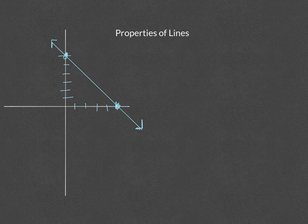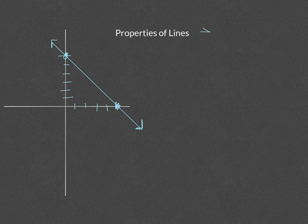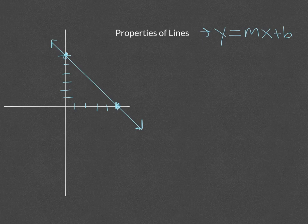We're going to take a look at the properties of lines that are in the form y equals mx plus b. So the first thing that a line will have is what's called the x-intercept.